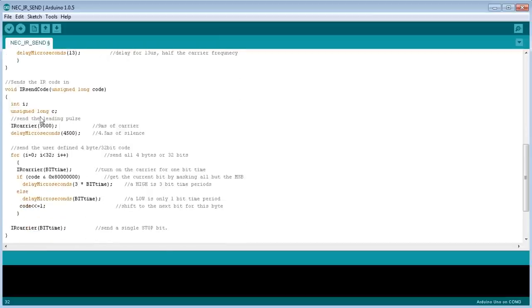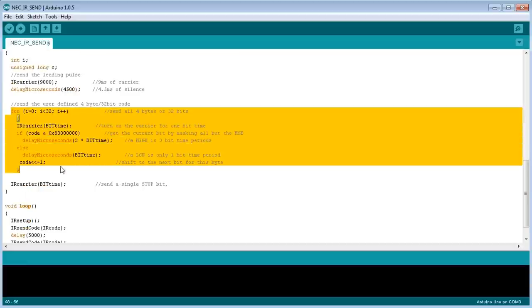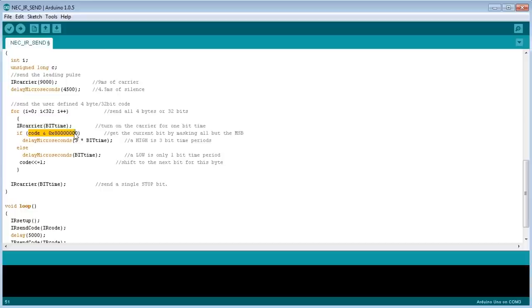And then we've got another routine which sends the 32-bit code. So you just pass it the code here as a long 32-bit long value. And then we have the generate the leading pulse here, as we saw on the oscilloscope. 9,000 microseconds. We turn the carrier on for, that's 9 milliseconds. And then we turn the carrier off for 4.5 milliseconds there. So we've generated our leading pulse, and then all we do is we go in a for loop here, and we send out all of our 32-bits or 4 bytes in sequence. I'm just doing that using a mask here. So I'm just masking the most significant bit, and then shifting it one bit at a time at the end of it.